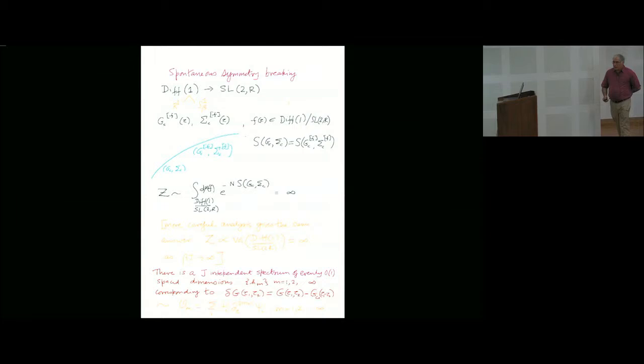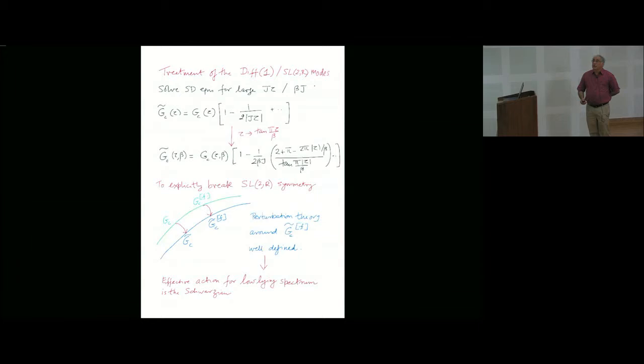Let me skip all this and go to the main point. In order to understand this model more carefully or calculate correctly, we need to solve the Schwinger-Dyson equations for large values of beta j or j tau. You have to resolve the problem and go away from the conformally invariant point, and this is the solution which Maldacena, Stanford and Kitaev came up with.